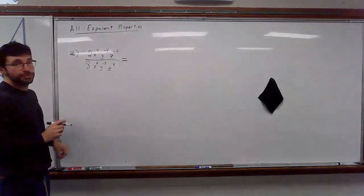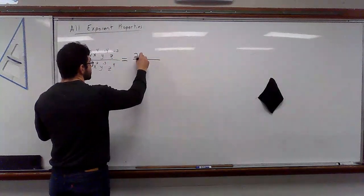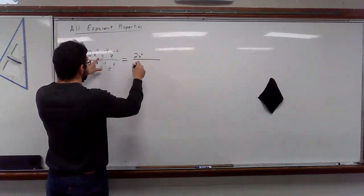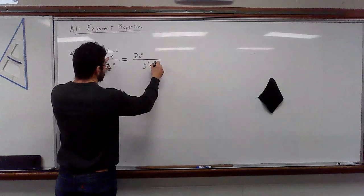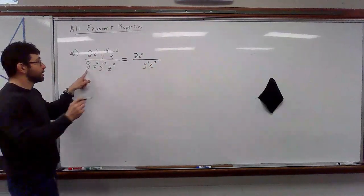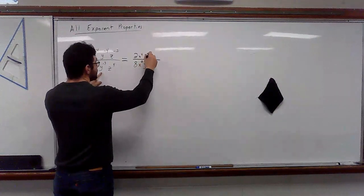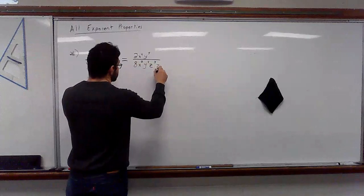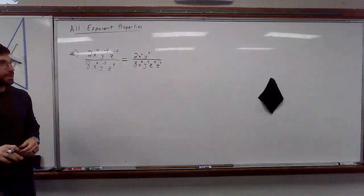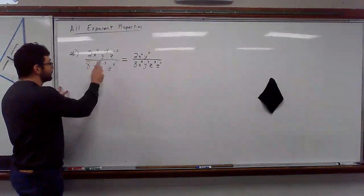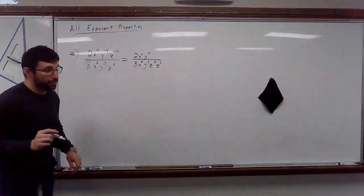Everything has an exponent, including the two and the eight. Two is positive. It stays. X is positive. It stays. Y is negative. So, it goes to the denominator. Z is negative. It goes to the denominator. I'm done with numerator and denominator. A good way to check is I have one, two, three, four, five, six, seven, eight terms. One, two, three, four, five, six, seven, eight terms. Okay. So, we're there.